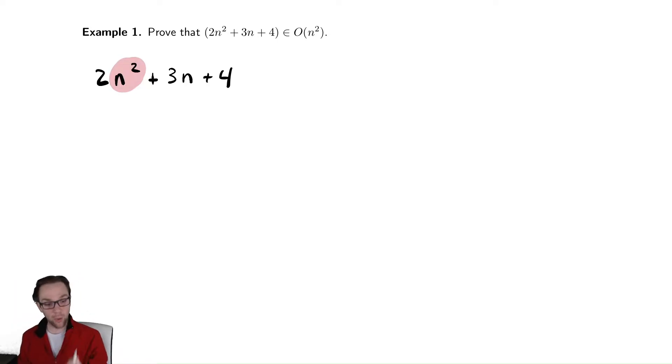And what are the lower order terms? I'll write down those phrases in case you've never heard them before. This is the highest order term, meaning it grows the fastest. The other two terms are what we call lower order terms.